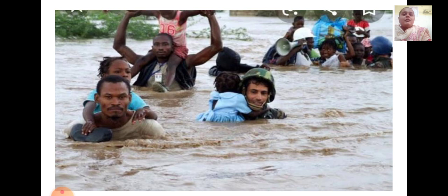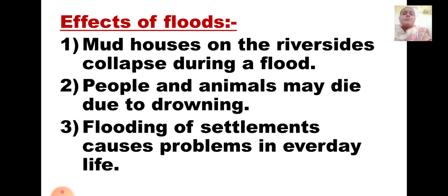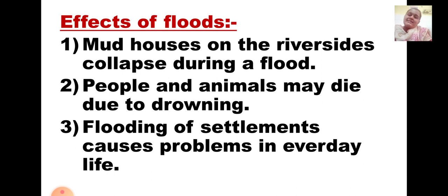This is a picture of floods — people are carrying all their belongings and children while walking through the water. It is very, very sad to see. What are the effects of floods? Mud houses on the riversides collapse during a flood. People and animals may die due to drowning — those who cannot swim can die in the water. Flooding of settlements causes problems in everyday life; if houses collapse and personal belongings are swept away, everything is shattered.